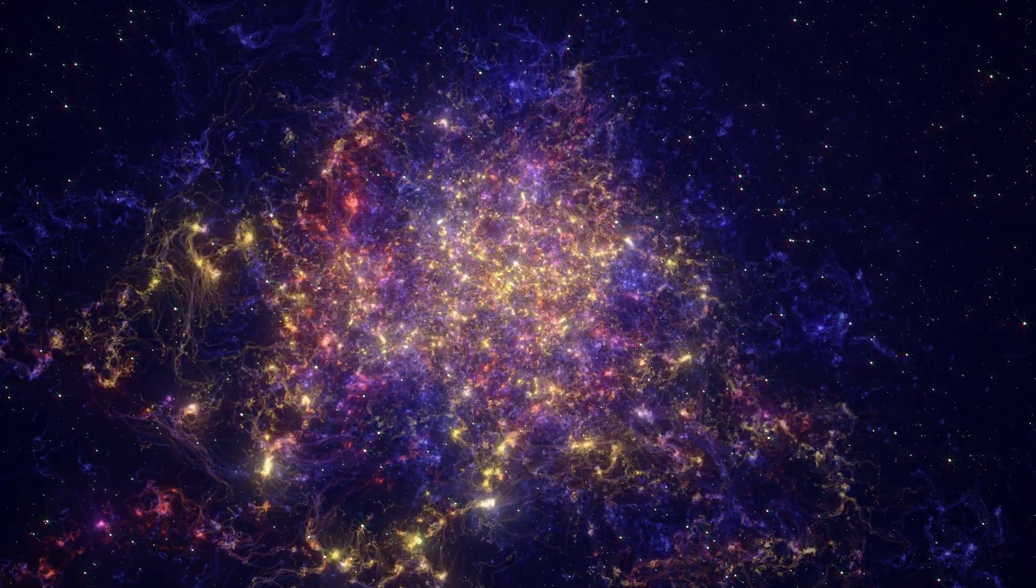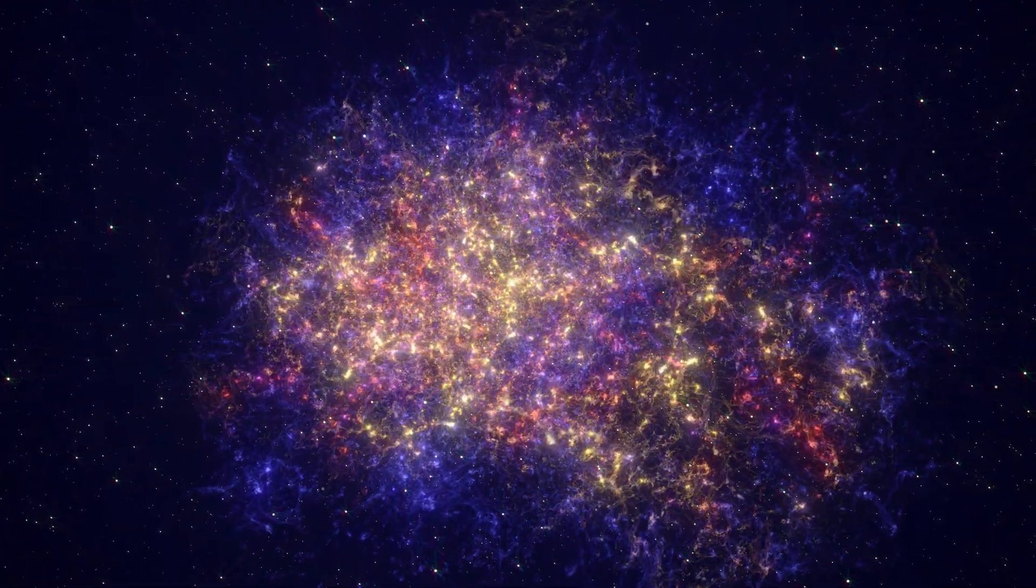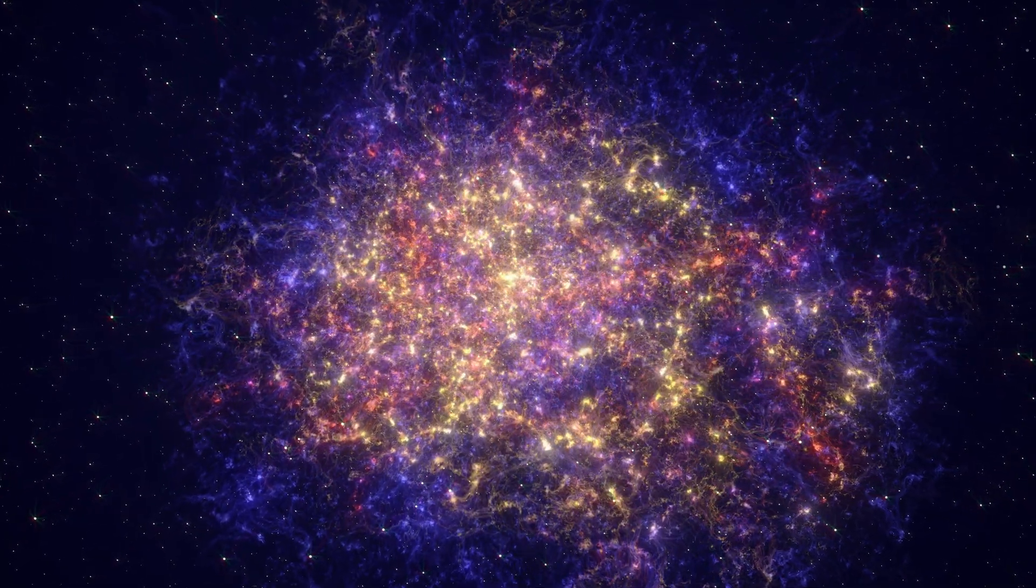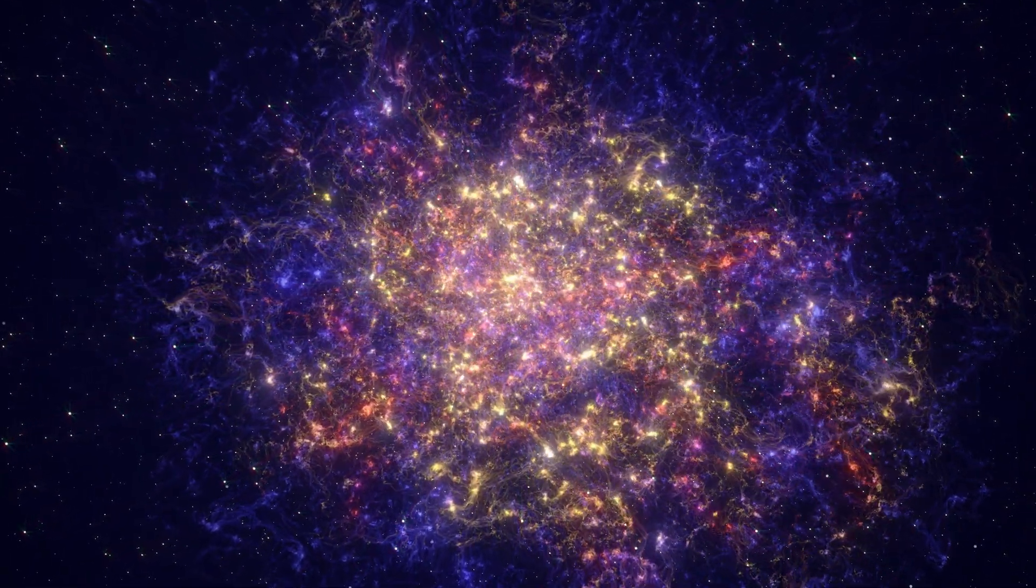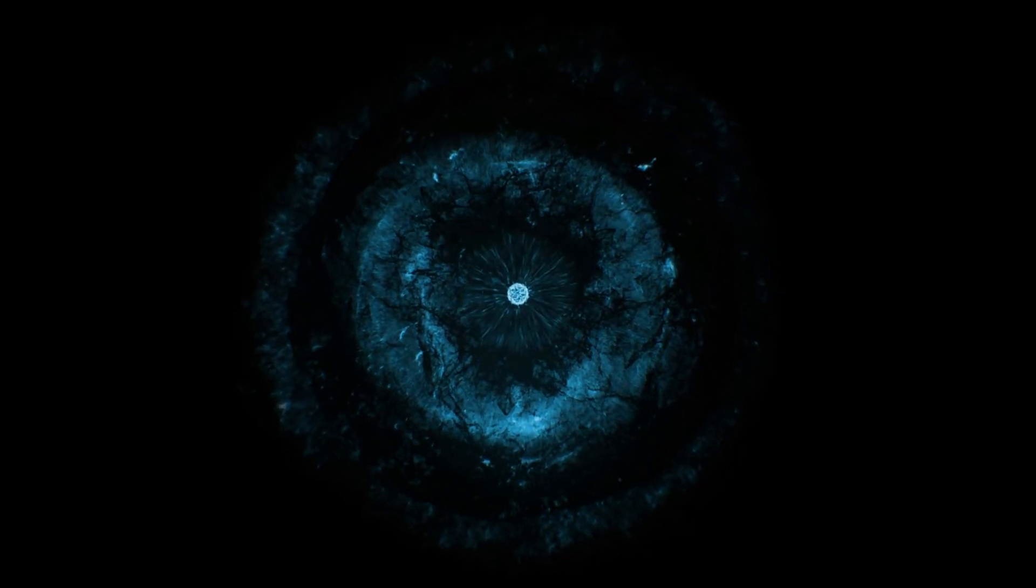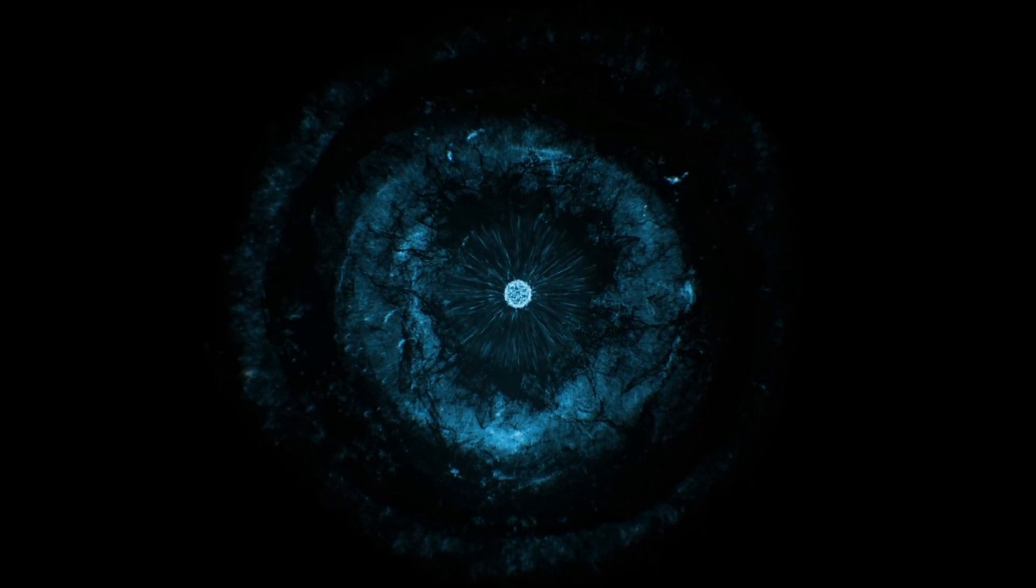The universe, once a stage for endless expansion, now contracts, with every star, planet and atom drawn inexorably towards a single point. This convergence leads to the ultimate collapse into a singularity, a point of unimaginable density and gravity. Here, all matter and energy are crushed together, erasing the vast expanses of space we once knew. The Big Crunch theory presents a universe not expanding forever, but destined to implode under its own weight. This scenario challenges our perception of time and space, leaving us to ponder the cyclical nature of existence.